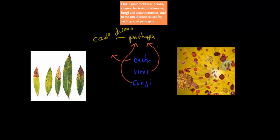It doesn't mean they have to be. For example, bacteria — many of them aren't pathogens. But there are things that can be a pathogen depending on the nature of their living. So if they live in us and cause us disease, then they're a pathogen. If they live in us and don't cause disease, they're not. The learning objective says: distinguish between prions, viruses, bacteria, protozoans, fungi, macroparasites, and name one disease caused by each type of pathogen.